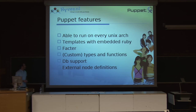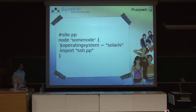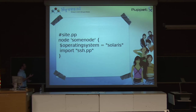Another feature we use from Puppet is the database backend support. All the facts that are available can be written into a database backend — we use MySQL for that. This lets us run all kinds of statistics: we can see which servers are on which kernel version, how many cores they have, how much memory. So it's very quick to get an overview when you have a large server fleet. Puppet also supports external node definitions. If you have a really large number of hosts and already have another system for asset management, you can write your own script to generate node definitions without having to manage everything in site.pp.